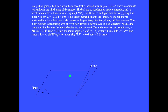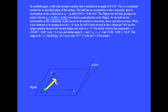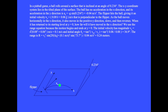In a pinball game, the ball rolls around a surface inclined at an angle of 0.234 degrees. The xy coordinate system lies in the tilted plane of the surface. The ball has no acceleration in the x direction, and its acceleration in the y direction is a sub y equals minus g sin(0.234 degrees) equals minus 0.04 meters per second squared. The flipper hits the ball giving it an initial velocity vector v sub 0 equals 0.08 i-hat plus 0.06 j-hat meters per second. As the ball moves horizontally in the x direction with constant v sub x, it also moves in the positive y direction, slows, and then reverses. When it has returned to its starting level at y equals 0, how far will it have moved in the x direction? We use the range equation because the motion begins and ends at y equals 0.